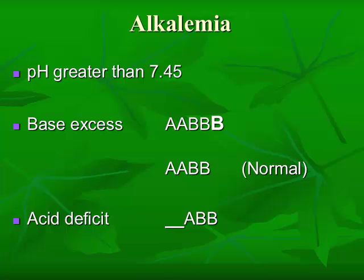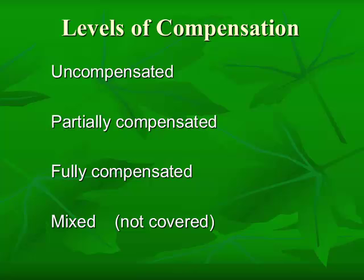Let's take a look at the categories of acid-base imbalances. There are four categories: respiratory acidosis, respiratory alkalosis, metabolic acidosis, and metabolic alkalosis. When comparing them to ABGs, we're also looking at levels of compensation — is the individual uncompensated, partially compensated, fully compensated, or mixed? We will not cover the mixed, as that's more complex. In an individual who is uncompensated, also known as a primary acid-base imbalance, the imbalances originate from an acute condition and the body has not mobilized enough yet to start to balance it out.